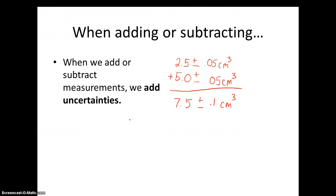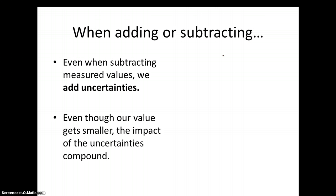The same thing is true if I subtract measurements. When we're subtracting measurements we're still going to add our uncertainty. The idea being that even though our number values may get smaller, the overall amount of uncertainty increases when we put those two numbers together. So we're going to add uncertainties even if we're subtracting other numbers.